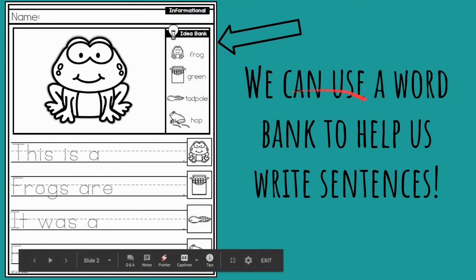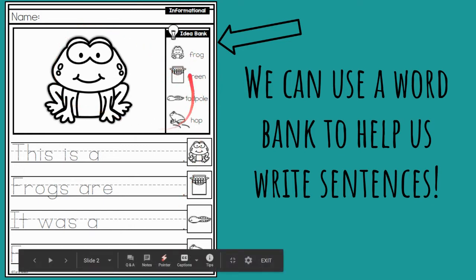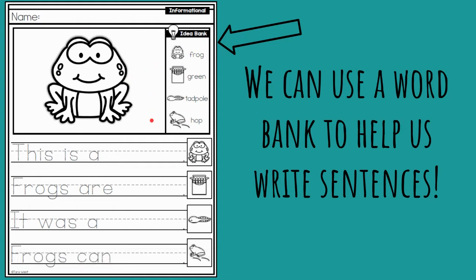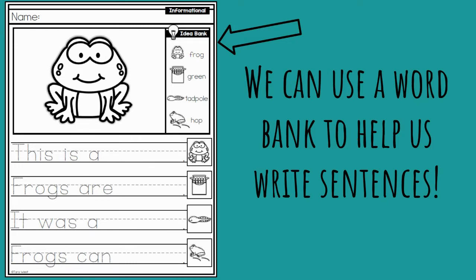We can use something called a word bank to help us write sentences. In our example, we have an idea bank or a word bank here that gives us words like frog, green, tadpole, hop — to help us brainstorm what we want to say about the frogs. We already did our illustration. We put it in a setting, did lots of details, colored real colors, and today we get to focus on writing words about the frog to help teach people about frogs, because that's what informational writing is for — to teach people.